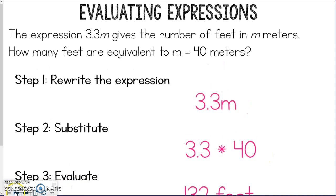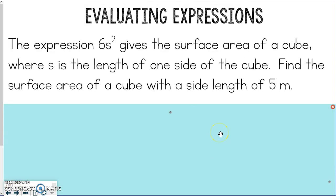If you need to go back, take a look, feel free. Otherwise, let's try one more. The expression 6s squared gives the surface area of a cube, where s is the length of one side of the cube. Find the surface area of a cube with the side length of 5 meters. 5m is just saying 5 meters. That's just the unit label.